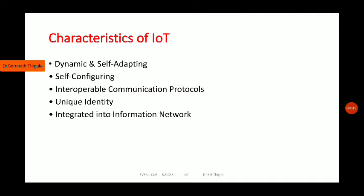A simple example of self-configuring is the Direct-to-Home (D2H) TV connection. Whatever device you have at home connected to your dish TV — that device detects signal quality, and if the signal quality is low, it adjusts itself to capture the best possible signal strength. If any change happens at the organization side, the device automatically takes the initiative to configure itself. That is what we call self-configuring.